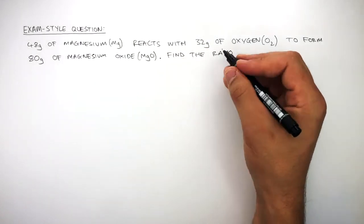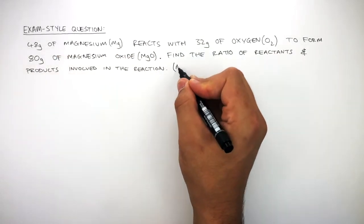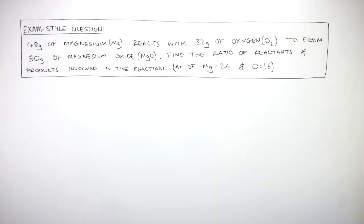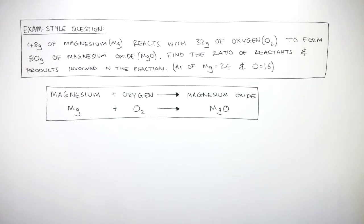Find the ratio of reactants and products involved in the reaction using these atomic masses. You're given the word equation and the symbol equation, and you have to show your working to balance the symbol equation.